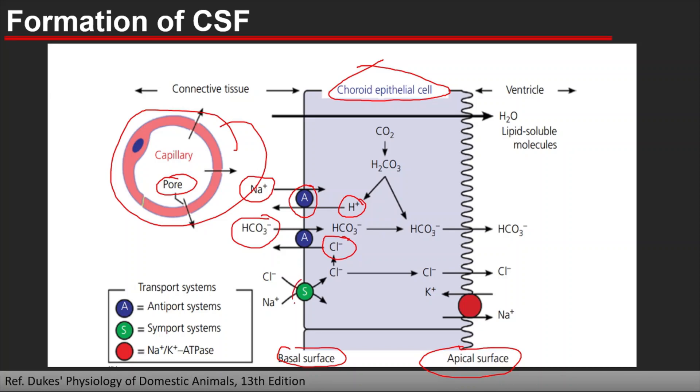Another transporter is the symport system. These are integral proteins that allow two molecules to move in the same direction across the membrane. Here, the molecules are chloride, sodium ion, and bicarbonate. Carbonate is formed from carbon dioxide coming from the metabolism of the cell plus water, and they form bicarbonate acid and then bicarbonate.